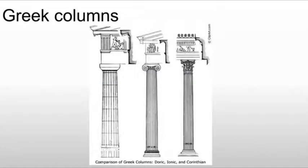Greek columns are created in three different forms: the Doric, the Ionic, and the Corinthian. I won't make you memorize these, but I'd like you to be aware that there are different forms that are used, and they're all doing basically the same thing.